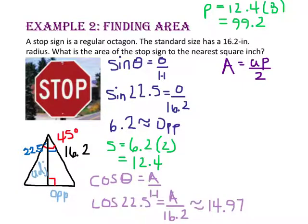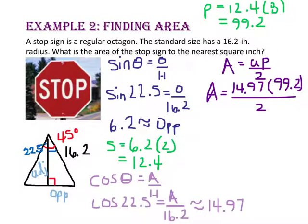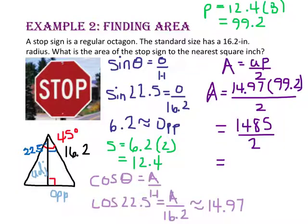Now that we know the apothem and perimeter, let's substitute them into our formula. 14.97 times 99.2 is 1,485 inches. Divided by 2 is 742.5 square inches. Rounded to the nearest square inch, that's approximately 743 square inches.